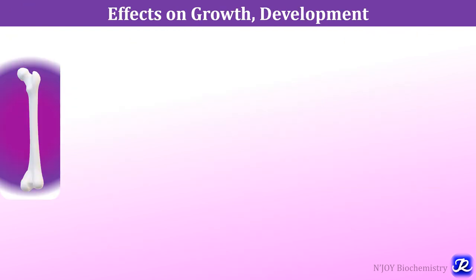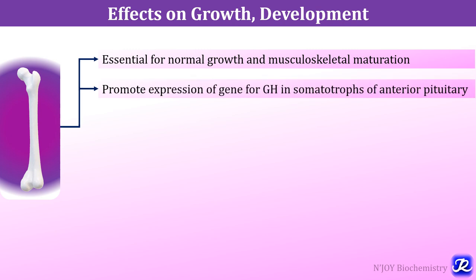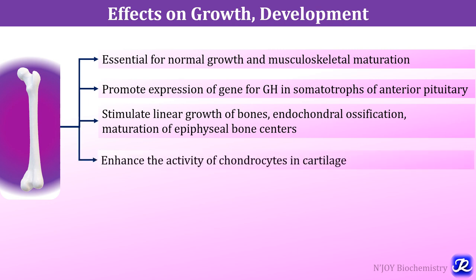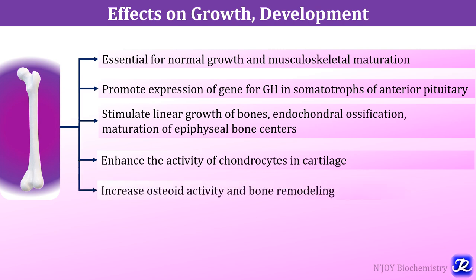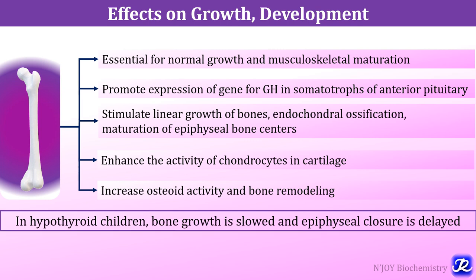Thyroid hormones have profound effects on growth and development. They are essential for normal growth and musculoskeletal maturation, promoting expression of the gene for growth hormone in somatotrophs of the anterior pituitary. They stimulate linear growth of bones, endochondral ossification and maturation of epiphyseal bone centers. They enhance the activity of chondrocytes in cartilage, increase osteoid activity and bone remodeling. In hypothyroid children, bone growth is slowed and epiphyseal closure is delayed.